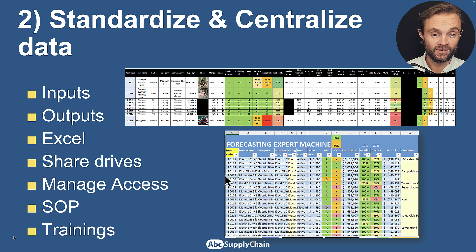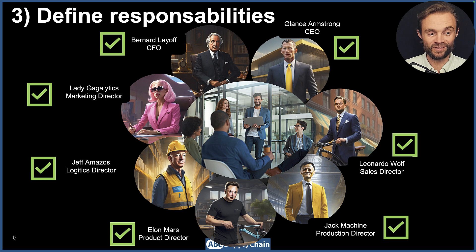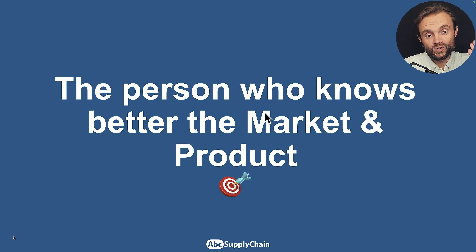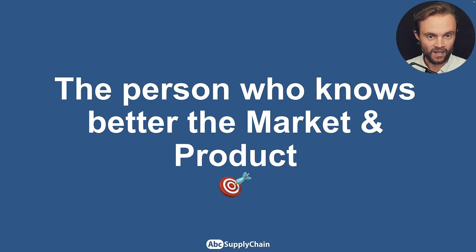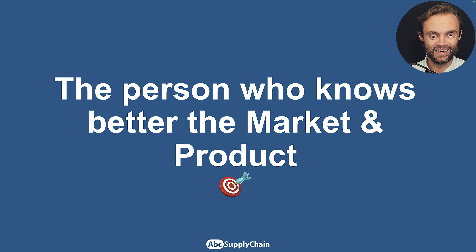Step three: be very clear on responsibilities — who is responsible for what in the launch and success of the new product. You have to become the facilitator to make sure everyone is on the same page. For example, across sales, marketing, logistics, production, manufacturing, and finance. In my view, it should be the person who knows the market and the product best. It's not necessarily sales — it could be the market leader, supply planner, or demand planner. One person can supply information on how many clients will take the product; another on seasonality.